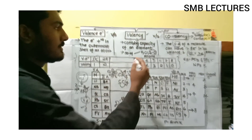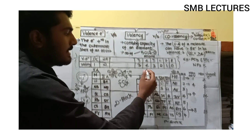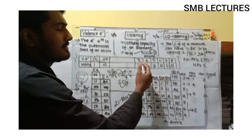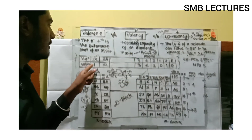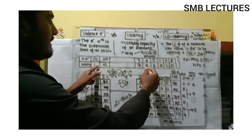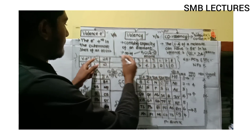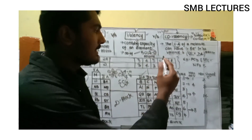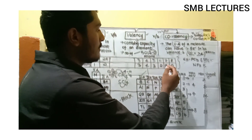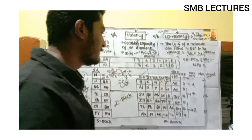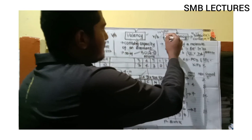For the boron group, the group number is 3A, so the number of valence electrons is three. In the same way, covalency till the carbon family is the same as the number of valence electrons; from the nitrogen family onwards it reverses — three, two, one, zero.